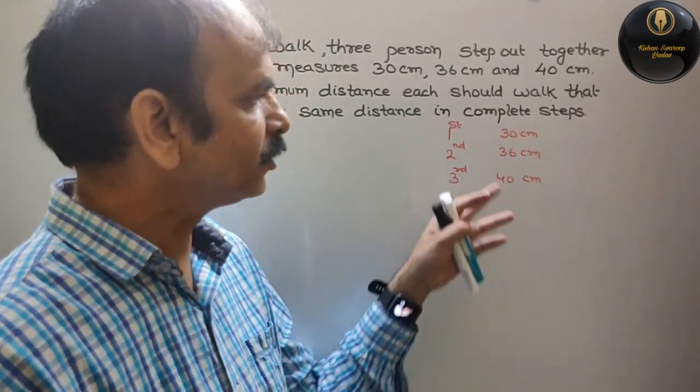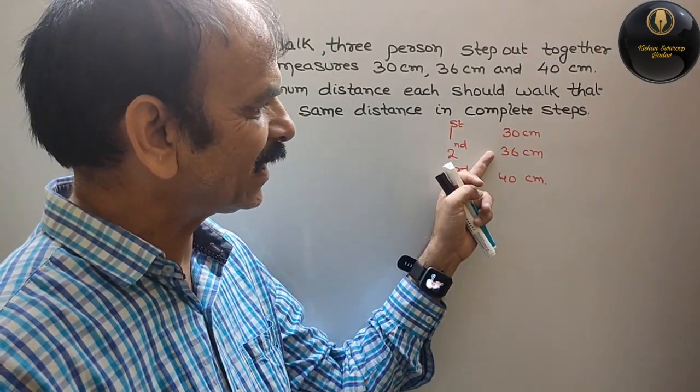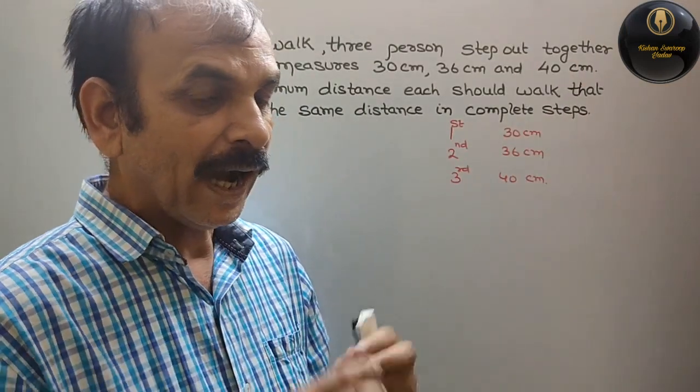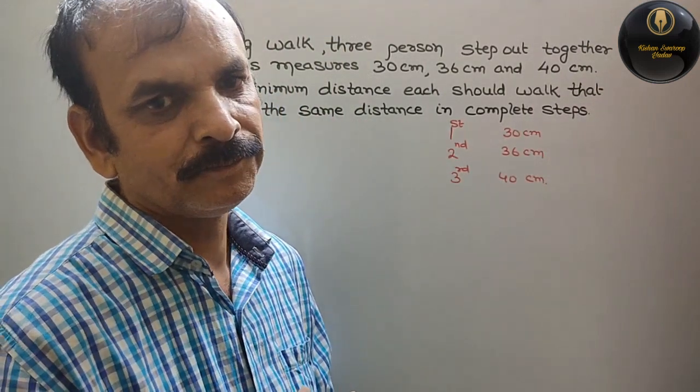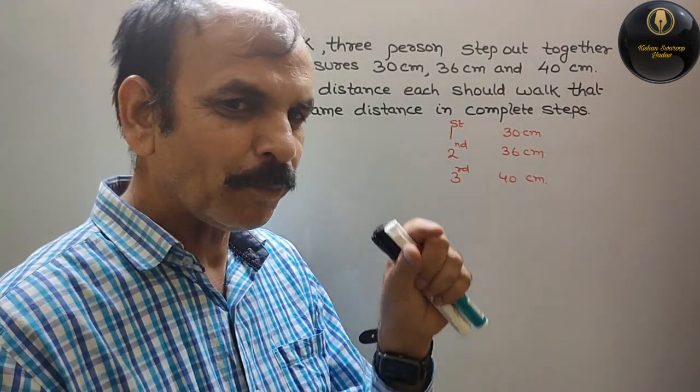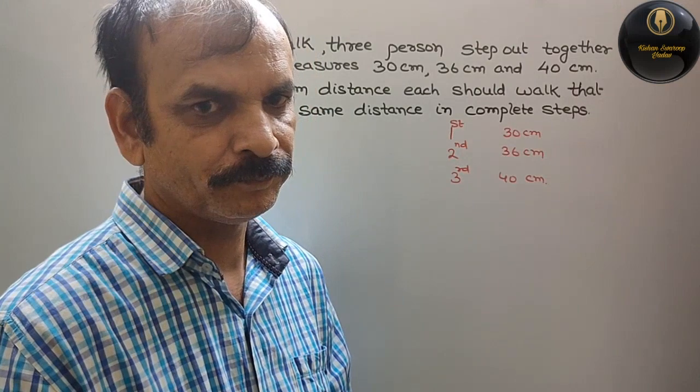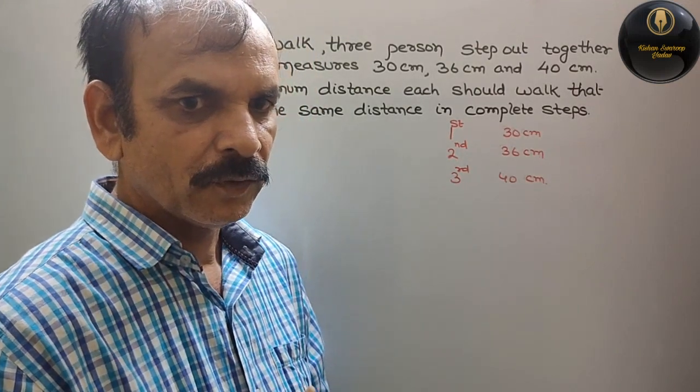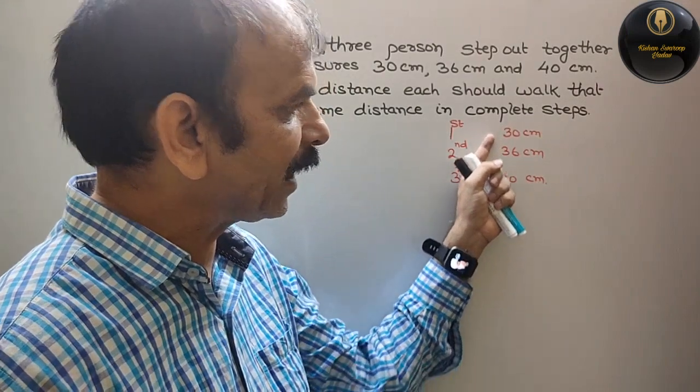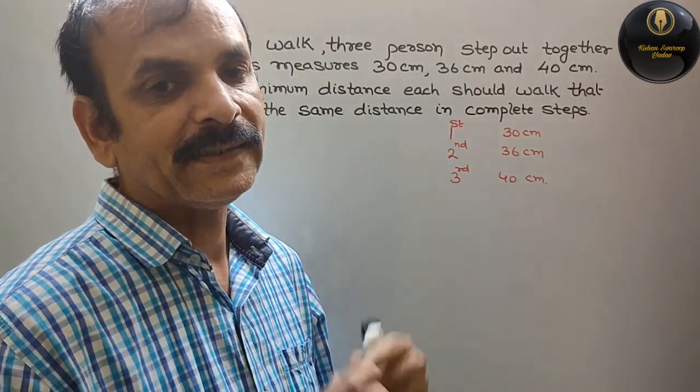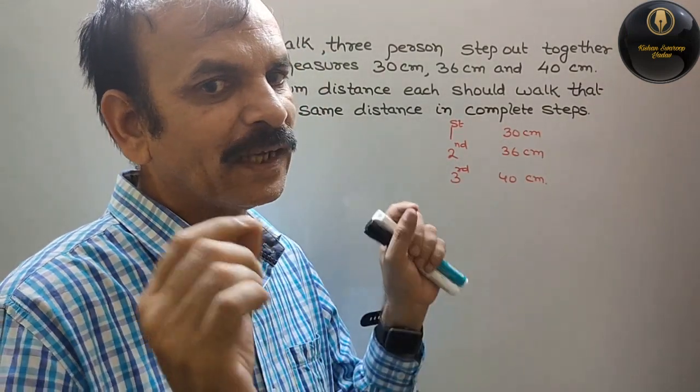You can see now 30 cm, 36 cm and 40 cm. So if you take this step, the highest common factor will be very small. That means we have to find out LCM.